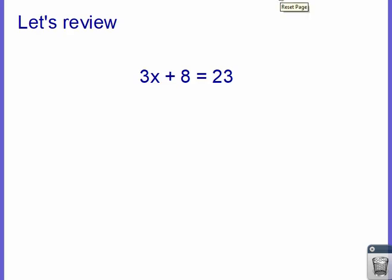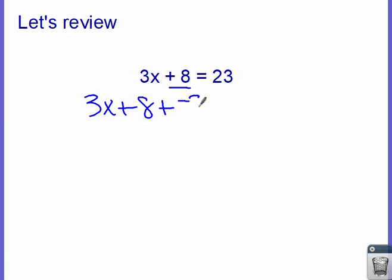The first thing we do in a two-step equation is we need to get the letter by itself. We need to get rid of this plus 8. To do that, we're going to add the opposite. So I should see a line that looks like this: 3x plus 8. We write that part down, and now to get rid of this 8, I add a negative 8. That's the new thing I've entered into the problem.